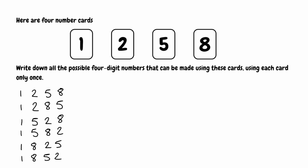That's all the combinations with 1 as the first digit. Now we move on to 2 at the front. Starting in order of size: 2, 1, 5, 8. Keeping 2 and 1 the same and swapping 5 and 8 gives us 2, 1, 8, 5.